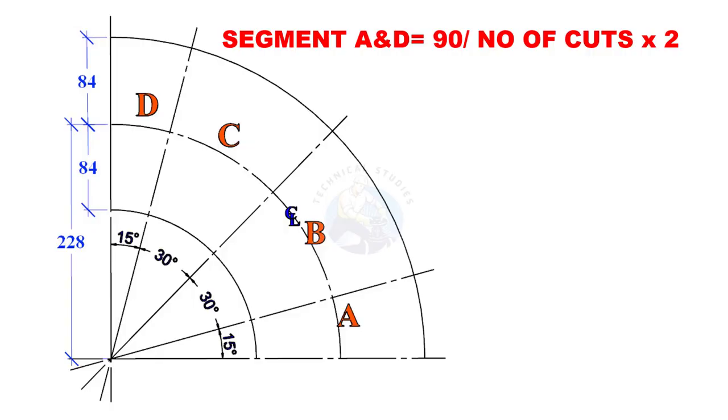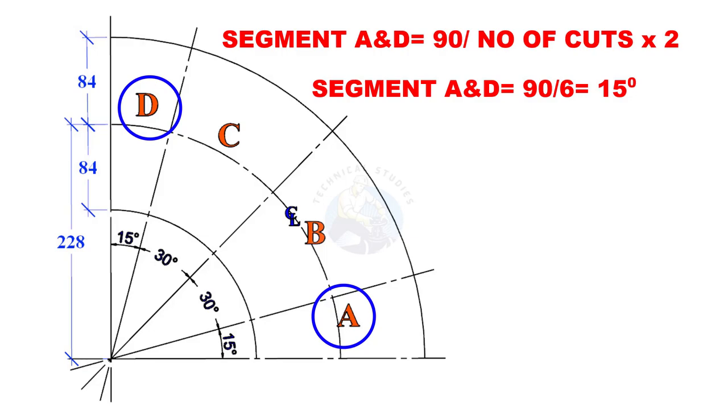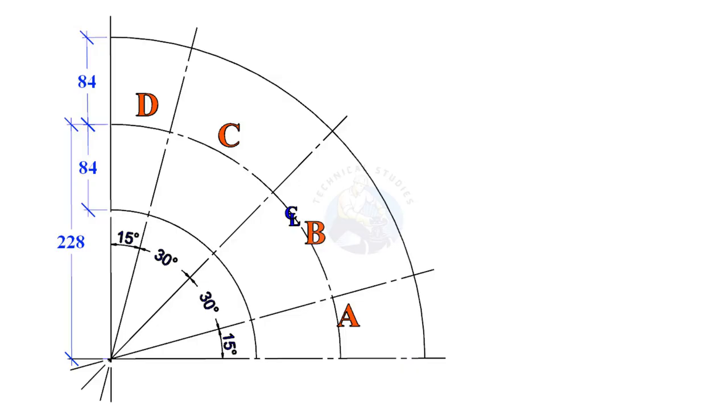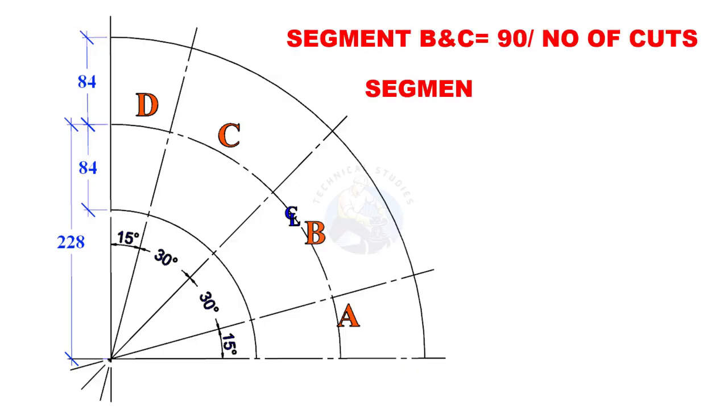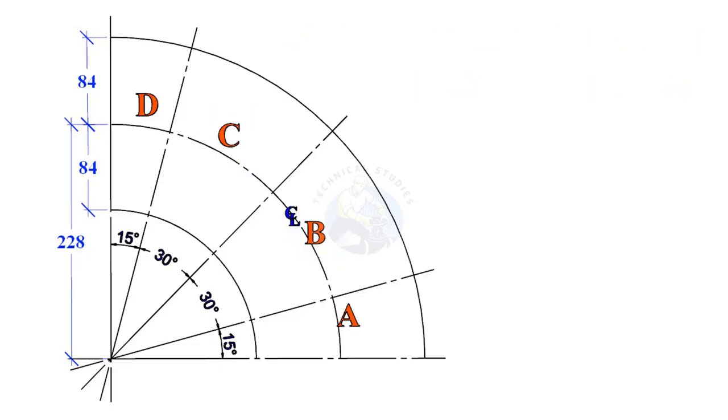To determine the degree of the parts A and D, divide 90 degrees by 6. This is a common rule for 90-degree three-cut mitre bends. To determine the degree of the parts B and C, divide 90 degrees by 3. Divide the arc as shown.